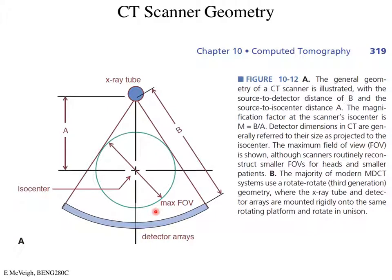Looking at the geometry: we have the bore of the scanner and the isocenter of the gantry rotation. The detector and x-ray tube are on a mechanical gantry that rotates around. There is a source-to-center distance that creates a magnification effect — if you have an object sitting on the patient's chest, when you shine x-rays through it and it casts a shadow, it will be magnified. This magnification is depth-dependent: an object at the chest is magnified more than an object at the spine.